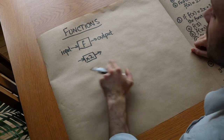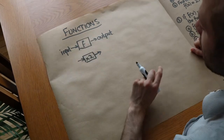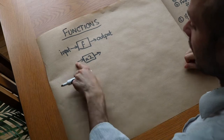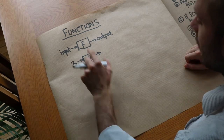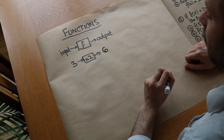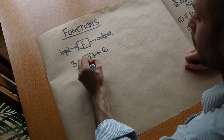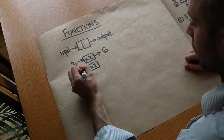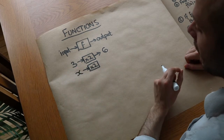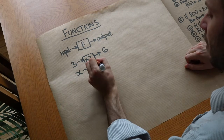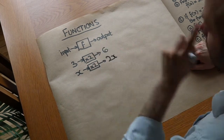This is known in the foundation tier GCSE as a number machine, but we're going to refer to them as functions. So let's just say the input was three, then the function just multiplies it by two, and it would spit out an output of six. But let's say the input was x to keep it as general as possible — then what would the output be? Well, x times two would be 2x.